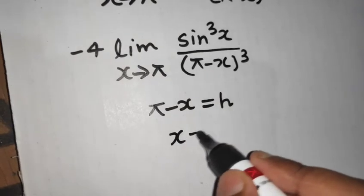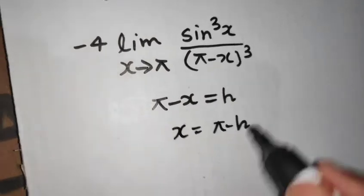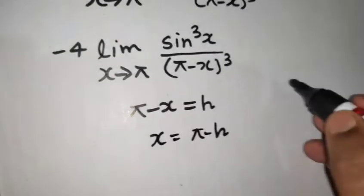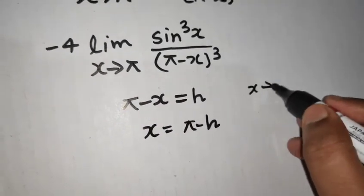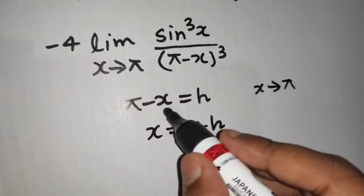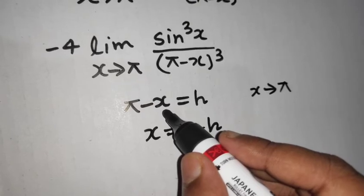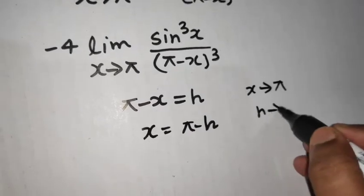So if I find x from here that will be pi minus h. So when x is approaching to pi this expression will approach to 0. So h will approach to 0.